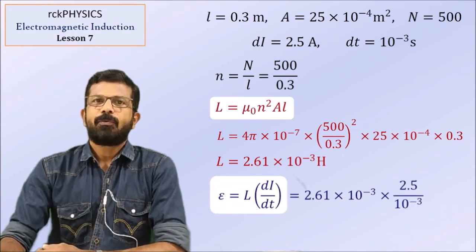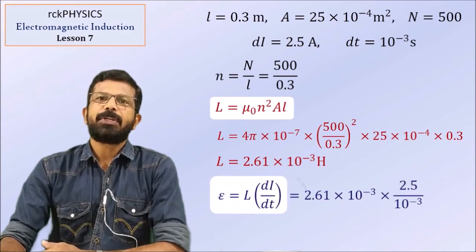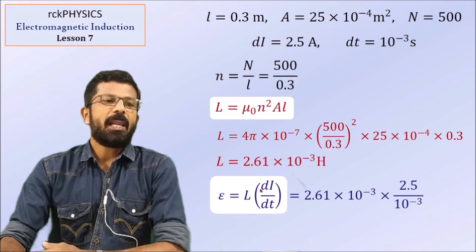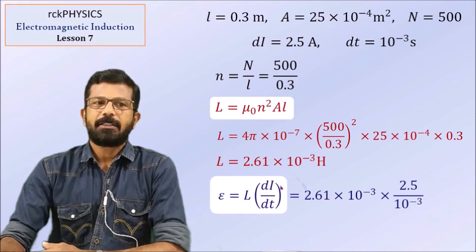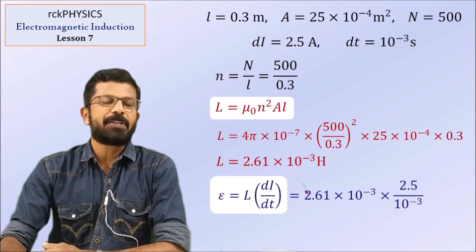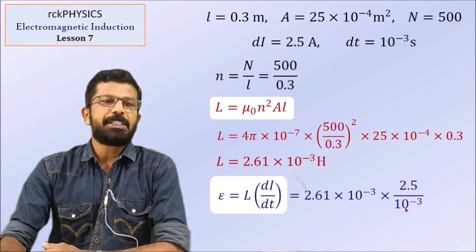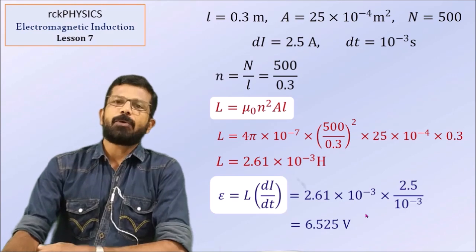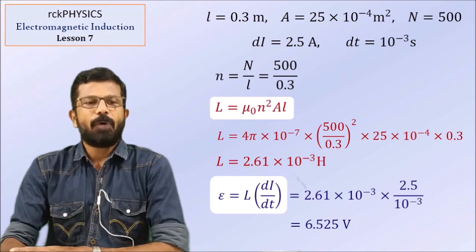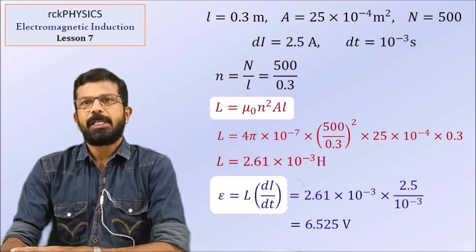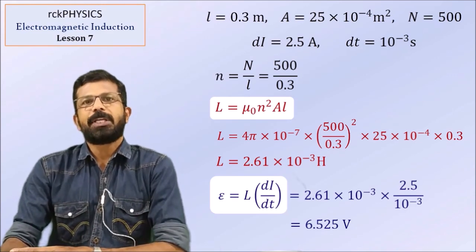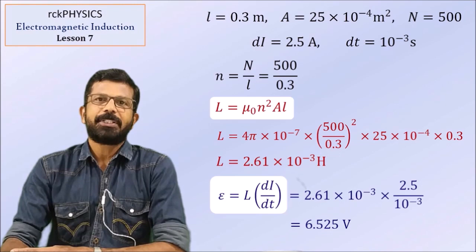What is the EMF induced? EMF induced is L into Di by Dt. L is 2.61 into 10 raised to minus 3 Henry, Di is 2.5 ampere, Dt is 10 raised to minus 3 second. The value comes out to be 6.525 Volt.